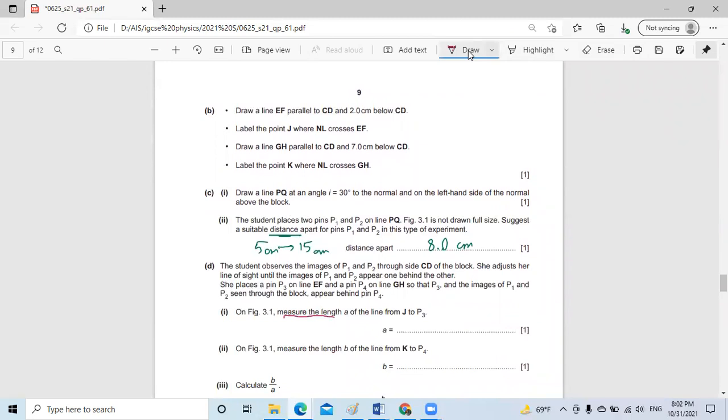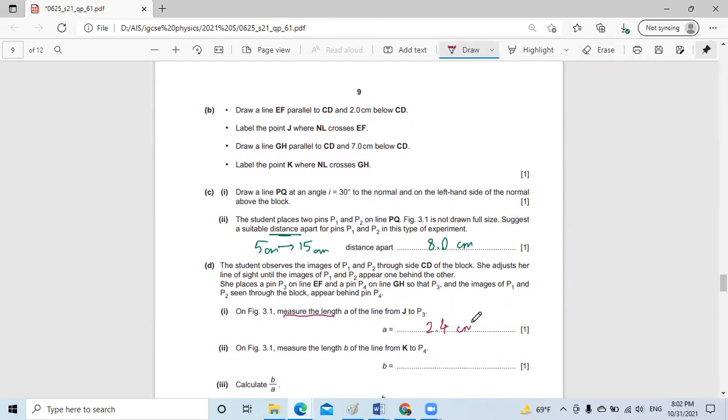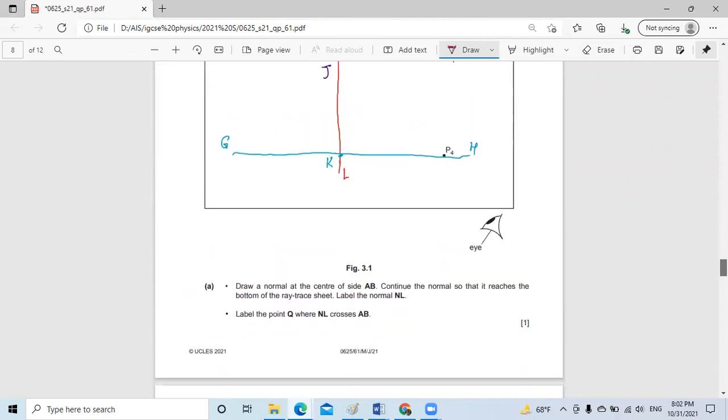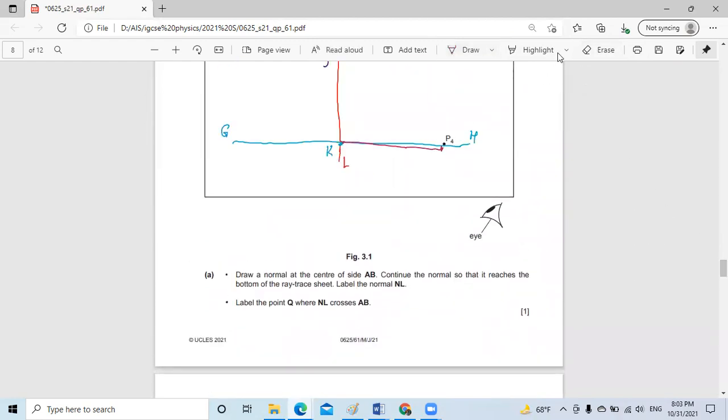They call the distance A. Then measure the length B from K to P4. They ask to measure the distance from here to somewhere here by using the ruler. It will be approximately 5.4 centimeters.